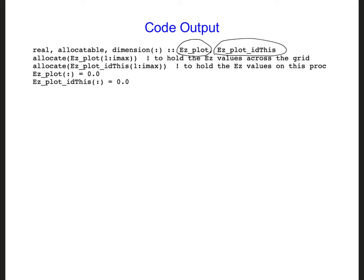The values in EZ_plot_idthis will all be equal to 0 except for the values that are updated on this processor. So, for example, EZ_plot_idthis for processor 0 will have values in the first half and then zeros in the second half. And on processor 1, it will have zeros in the first half and values in the second half. We will then have the code combine all of the different EZ_plot_idthis arrays on the different processors and combine them into the EZ_plot array. Let's take a closer look at this.